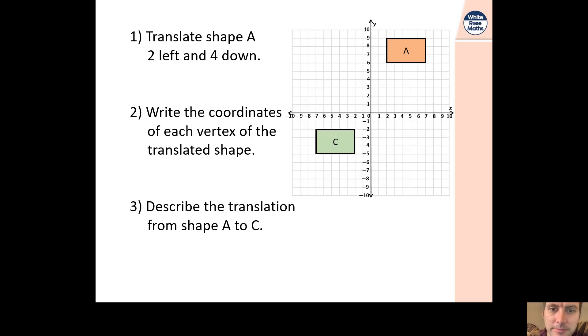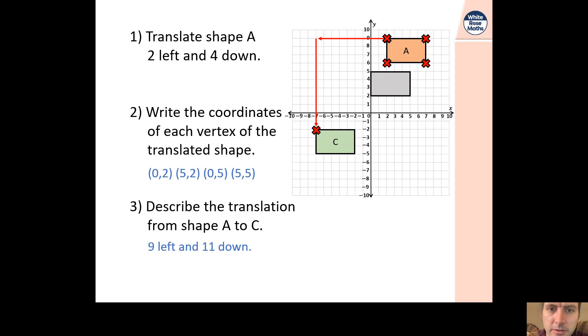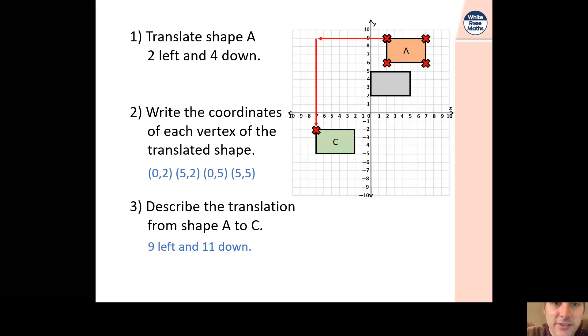Once you've done that, you'll see the points are translating as we move them down. Sorry, it's happening slower than anticipated. We can see the new points where we've translated it. The translated shape's points are 0, 2, 5, 2, 0, 5, and 5, 5. The translation from A to C, those four red crosses have gone 9 to the left and 11 down. My screen went a bit fuzzy. So it's 9 to the left and 11 down. That's just a refresh from yesterday. I apologize that I misspoke with the instructions.